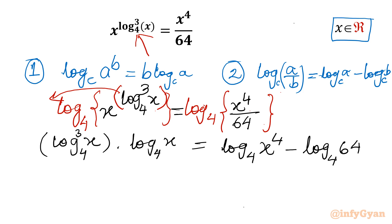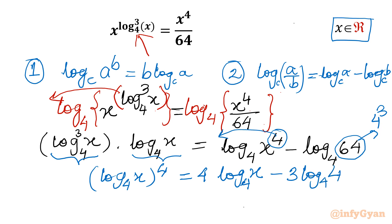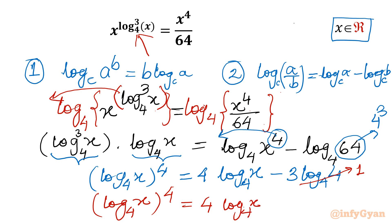On the left-hand side we have log_x base 4 times log_x base 4, which is (log_x base 4)^4. Taking the 4 as a multiplier on the right-hand side gives 4 log_x base 4. And since 64 = 4³, log base 4 of 64 = 3 log 4 base 4 = 3. So the equation becomes (log_x base 4)^4 = 4 log_x base 4 minus 3.